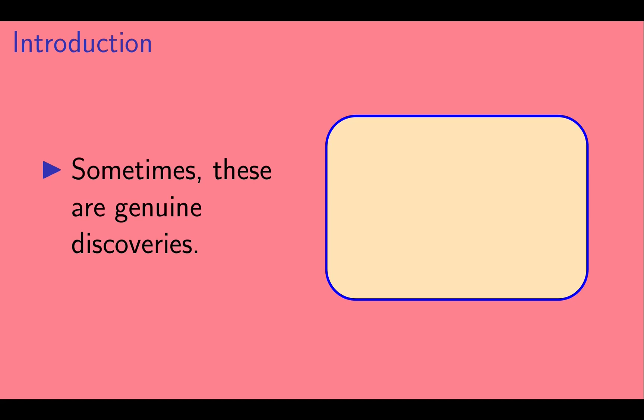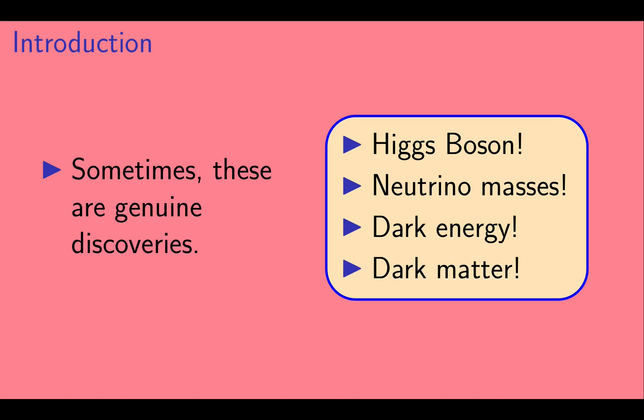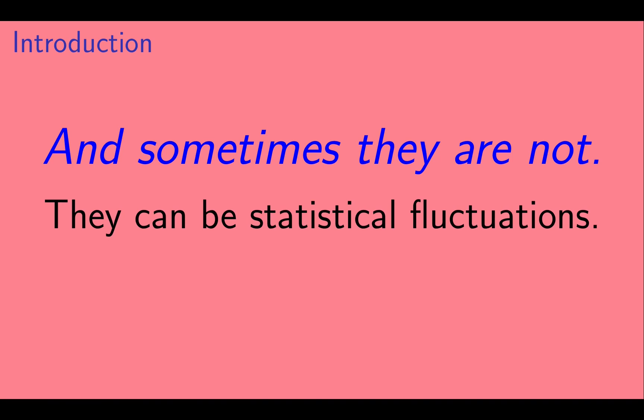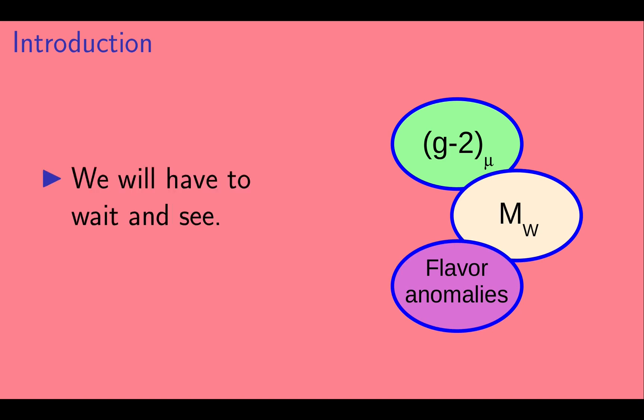Now, sometimes these results are genuine discoveries. For example, the Higgs boson, neutrino masses, and dark energy and dark matter, which we still don't understand but are pretty sure are real. And sometimes they are not discoveries. They can be statistical fluctuations. Or, unfortunately, sometimes even mistakes. As for muon g-2, the w mass, and those flavor anomalies, we will have to wait and see if they are signs of new physics or red herrings.